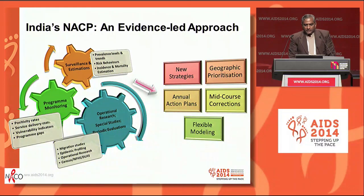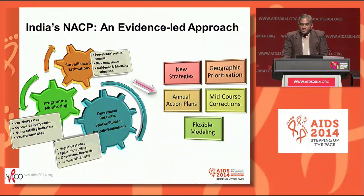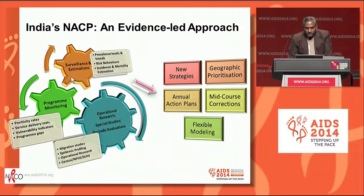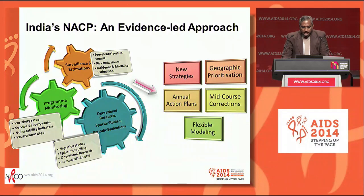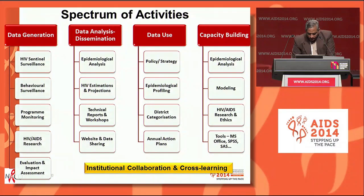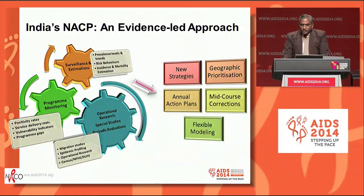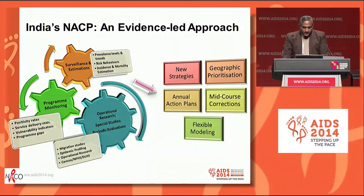As we all know, the programs in all countries are based on evidence-led approaches where we have program monitoring providing us the positivity rates, the service delivery statistics, the indicators of vulnerability, and the program gaps. In India, we also have a strong HIV sentinel surveillance which, along with estimation, provides us the prevalence levels and trends, the risk behaviors, and incidence and mortality estimation. We have also now introduced integrated biobehavioral surveillance this year, and we have operational research studies and special studies to answer specific questions posed by the program managers, and also some studies on epidemic profiling and migration studies.